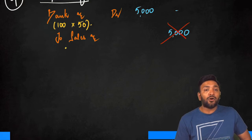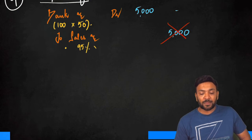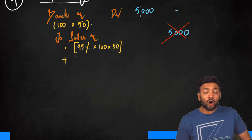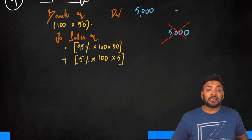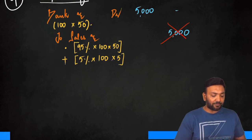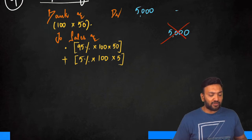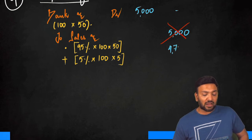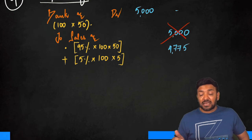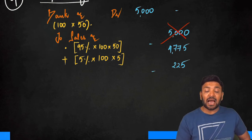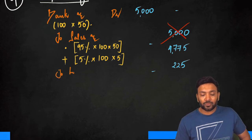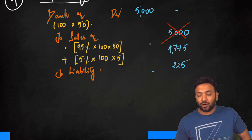First part: on 95 percent of goods which I expect will not be returned, I will recognize full revenue. Plus, on the balance 5 percent of goods expected to be returned, I will still collect 10 percent of the transaction price. So the revenue is 95 into ₹50 plus 5 into ₹5, which is ₹4,750 plus ₹25 = ₹4,775. I will recognize revenue only to the extent of ₹4,775. The balance ₹225 will be recognized as a liability of return.